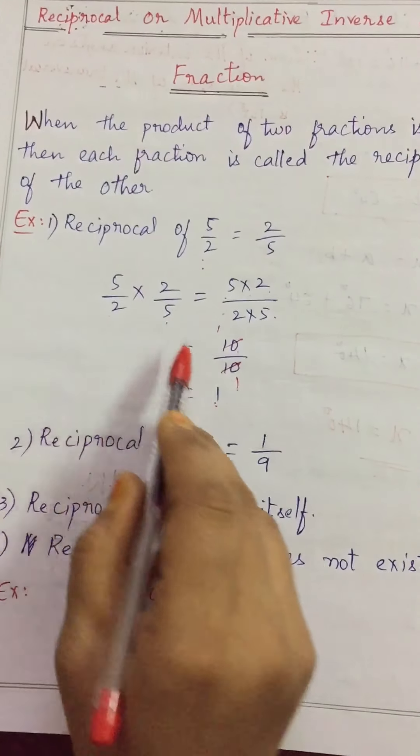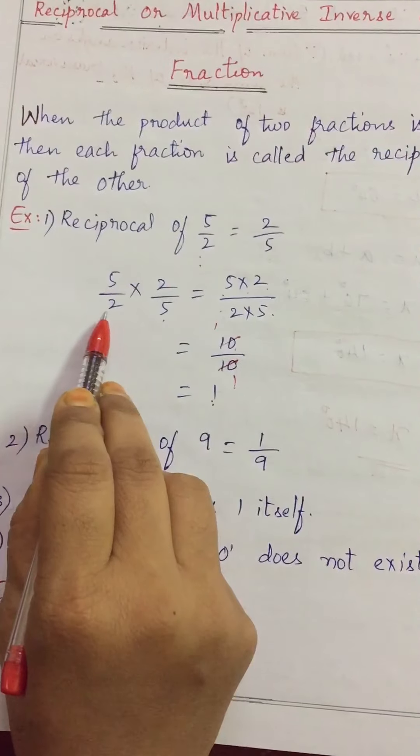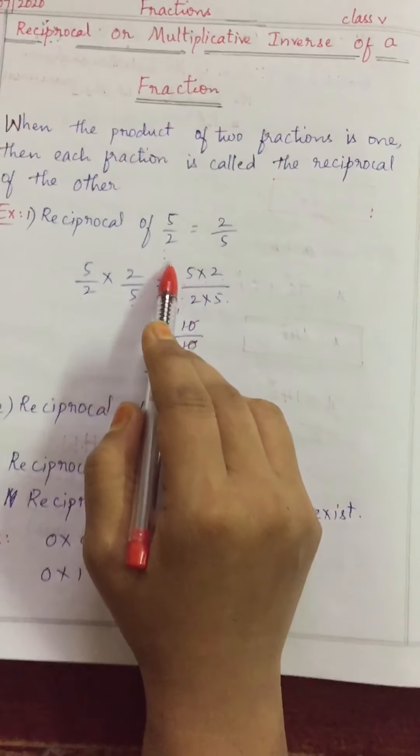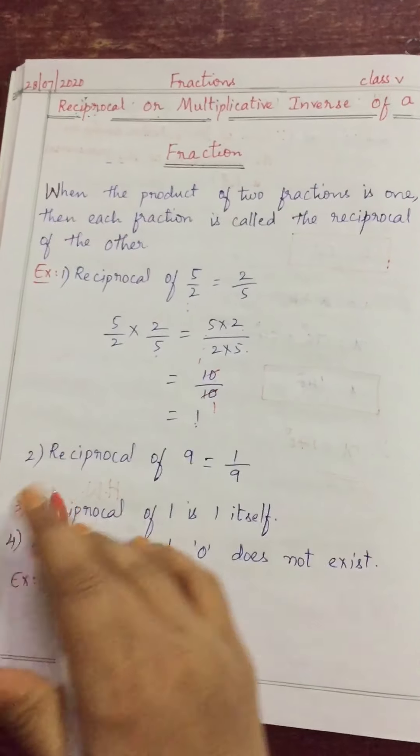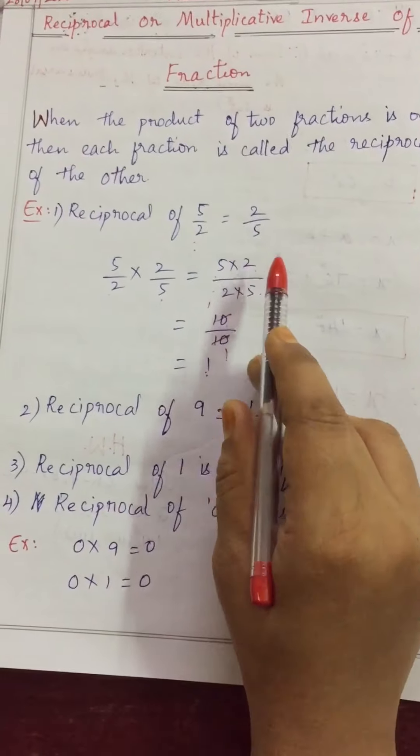After multiplying two fractions, if answer is 1, they are called reciprocal to each other or multiplicative inverse. So, 5 by 2 is one fraction. Take the reverse of that. Numerator become denominator, denominator become numerator. That is called reciprocal.